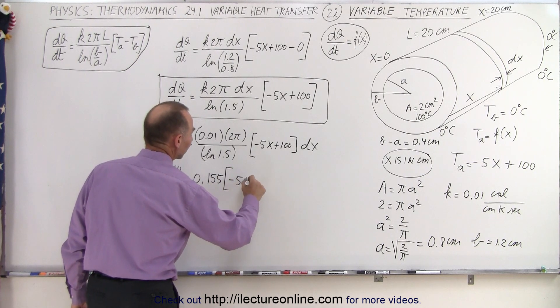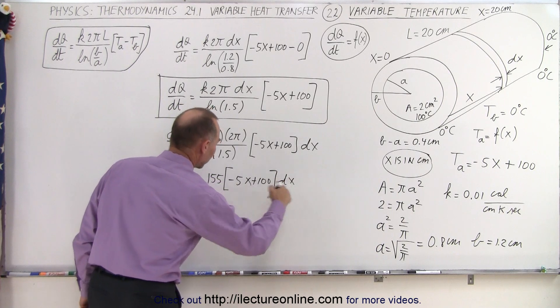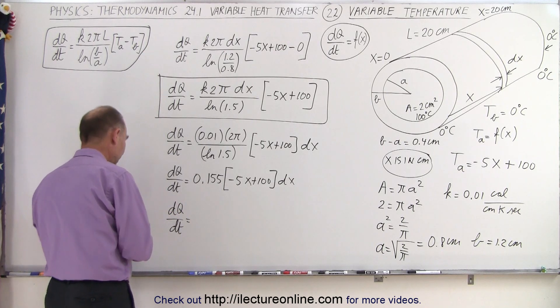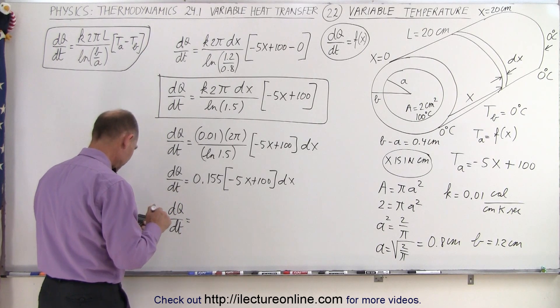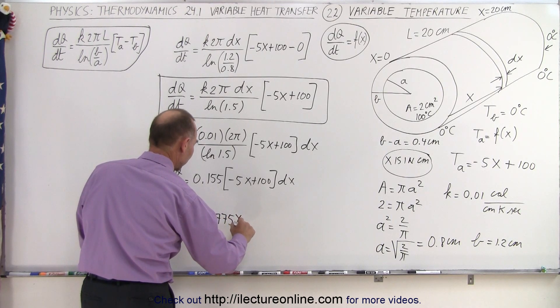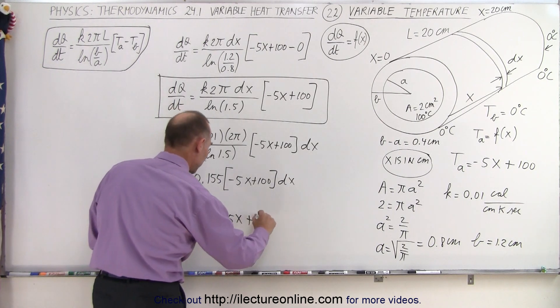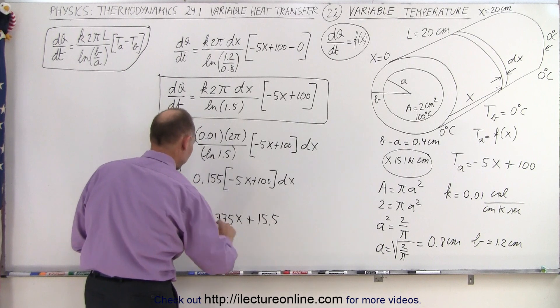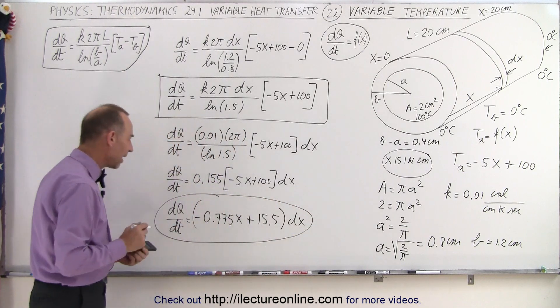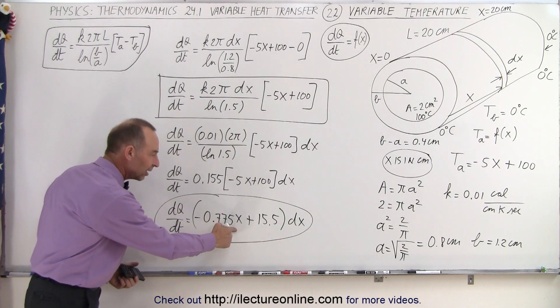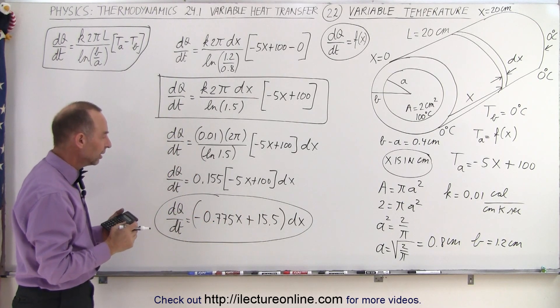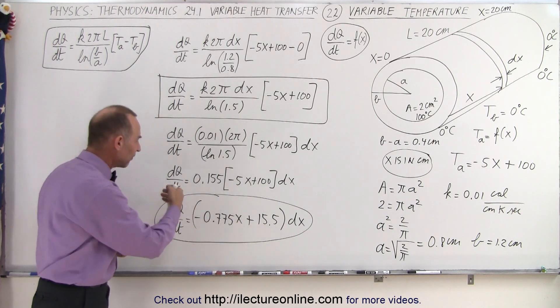So this would be dq/dt which is equal to 0.155 times minus 5X plus 100 times dx. And then if we multiply that through we get dq/dt is equal to minus 0.775X plus 15.5 times dx. And so this is a much cleaner equation that's easier to see so that we have dq/dt as a function of X, and we multiply it times dx because that's only good for a specific location on that cylinder, and for different values of X we get different values of dq/dt.